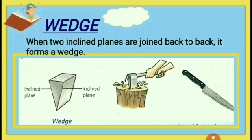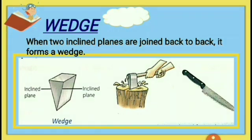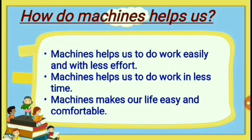The fifth simple machine is the wedge. A wedge is a simple machine that has two inclined planes joined together back to back in the form of a V. It has a sharp edge on one end and a blunt edge on the other side. As you are seeing in this picture, a knife is an example of a wedge. It is mostly used to split things apart. I hope you all have understood about simple machines, complex machines, and some of the simple machines used in our daily life. Now, let us study about how machines help us. Machines help us to do our work easily and with less effort, and in less time, making our life easy and comfortable.